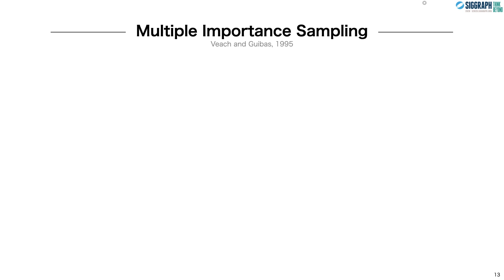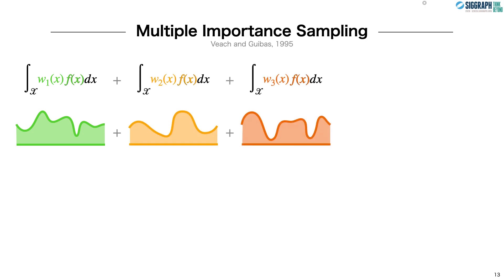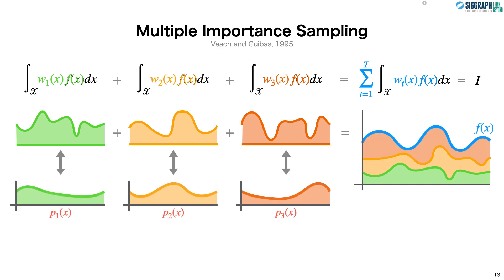Veech and Gibas proposed one way to do so, called multiple importance sampling, or MIS. In MIS, we break down the integral into a series of weighted integrals that sum to the original integral. We can then estimate each weighted integral with a different technique. Given this decomposition, and having chosen how to estimate each weighted integral, Veech then considers two options for estimating their sum, one sample MIS and multi-sample MIS.